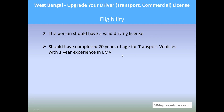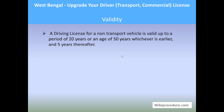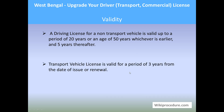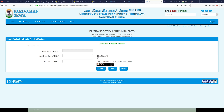Eligibility: the person should have a valid driving license and should have completed 20 years of age for transport vehicles, with one year of experience in LMV. Validity: a driving license for a non-transport vehicle is valid up to a period of 20 years or until the age of 50 years, whichever is earlier, and for five years thereafter. A transport vehicle license is valid for a period of 3 years from the date of issue.